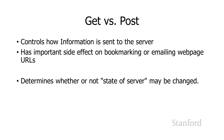Basically, what the method controls is how the information is sent to the web server. This has important implications for bookmarking and emailing web pages. If you've ever tried to email a friend the results of a search and they weren't able to get those results, what was going on was the POST versus GET setting. It also has implications for whether or not the state of the server is changed by the form submission.